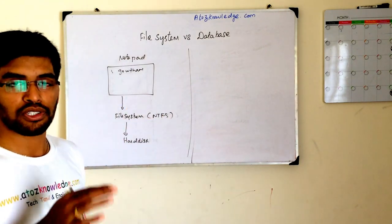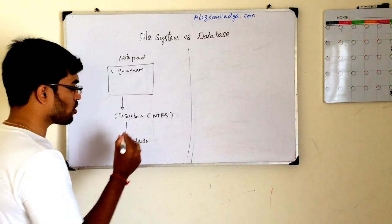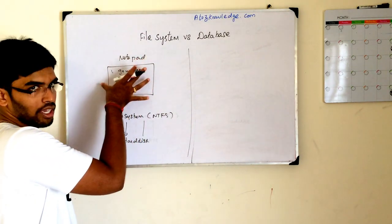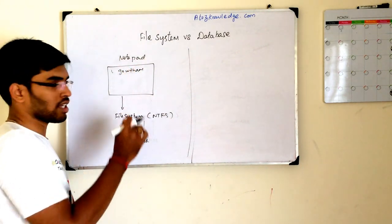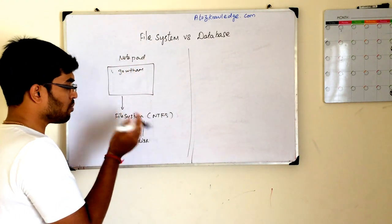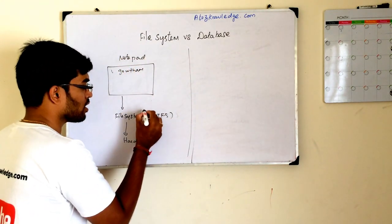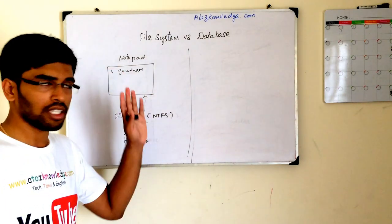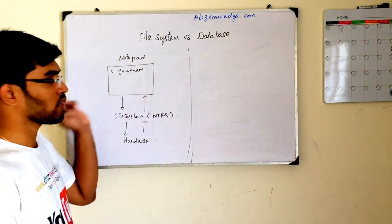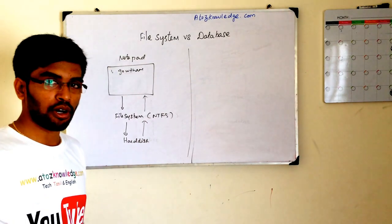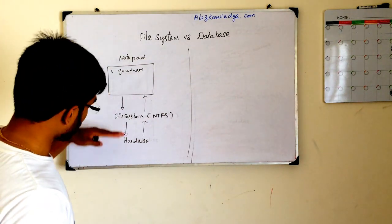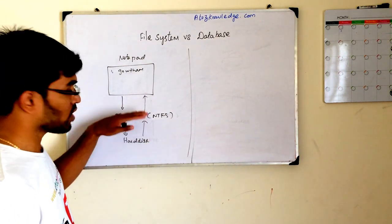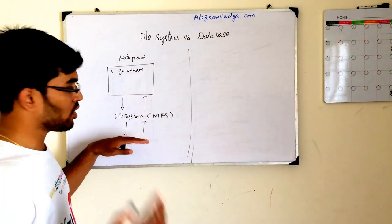From NTFS it goes to the hard disk, where it does some internal operations on your file. To read it back, you send a request from the UI — like double-clicking the file — and the data comes back from the hard disk via the file system. This applies not only to text data but also to a movie file downloaded from the internet: it gets stored to the hard disk via the file system, and when you open it, it is read back through the file system.